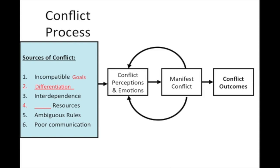Next on the list is task interdependence. The degree of task interdependence ranges from pooled to sequential to reciprocal, and high levels often result in conflict. This can be overcome by creating buffers that decouple the dependence — for example, on a sequential assembly line, having some extra stock in front of each person so they are never completely dependent on the flow of goods from the person upstream. These buffers that decouple dependence can help reduce conflict associated with task interdependence.